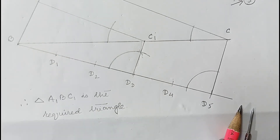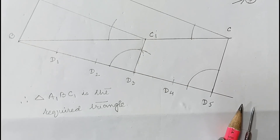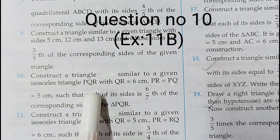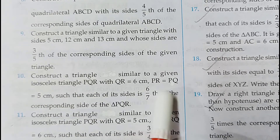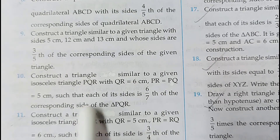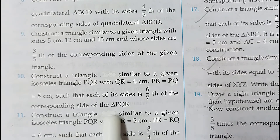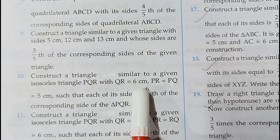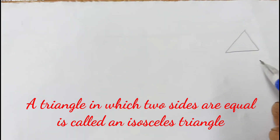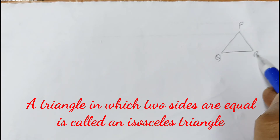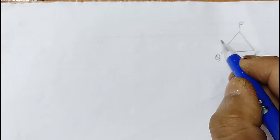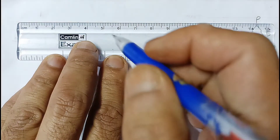This construction is quite similar to the previous ones. Now in question number 10, we have to construct a triangle similar to a given isosceles triangle PQR with QR = 6 cm and PR = PQ = 5 cm, such that each side is 6/7 of the corresponding side of triangle PQR. So we draw an isosceles triangle with two equal sides of 5 cm and a base of 6 cm.